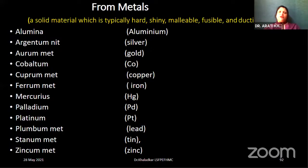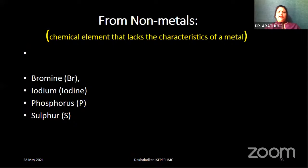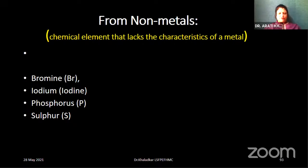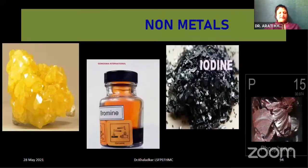Let us see inorganic compounds: the ammonium group, iron group, and the potash group. From the ammonium group, examples include ammonium acetate — there are many, so kindly refer your textbooks. The most important thing is to understand the baseline fundamentals of what inorganic and organic compounds are and the groups under them. Iron group: Ferrum phosphoricum. Potash group: Causticum.